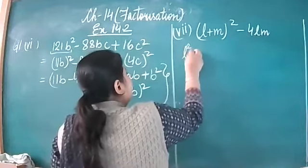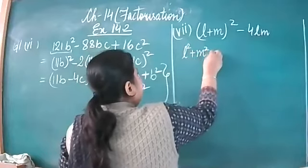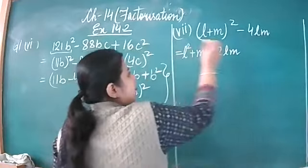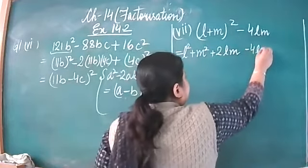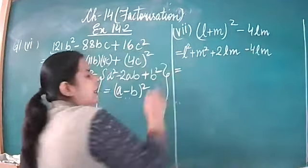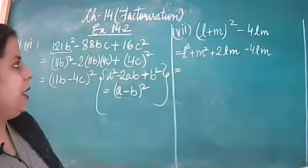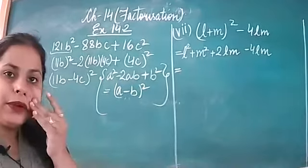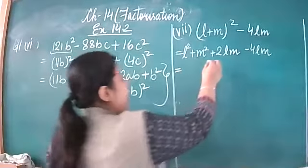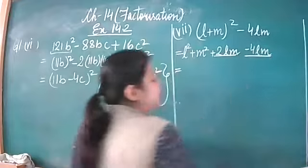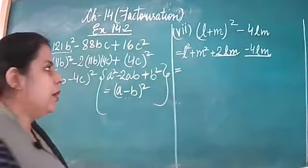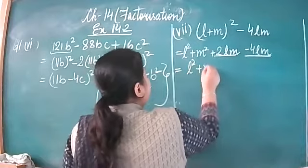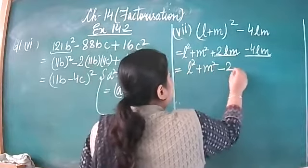Expanding the bracket gives us l squared plus m squared plus 2lm, minus 4lm. Here we have two like terms. After combining them, this will be l squared plus m squared minus 2lm.